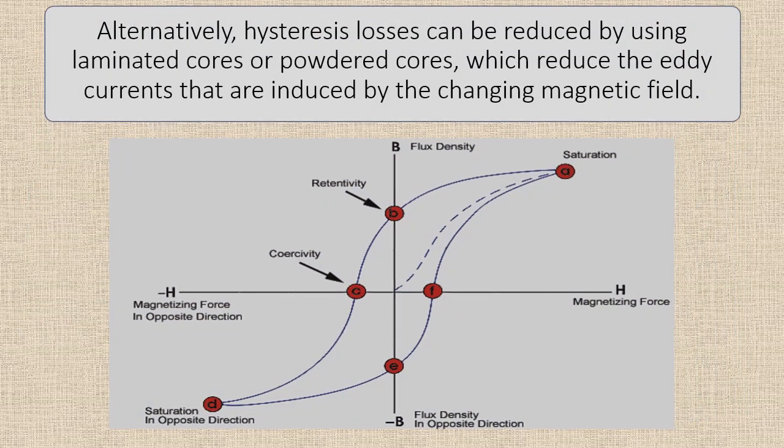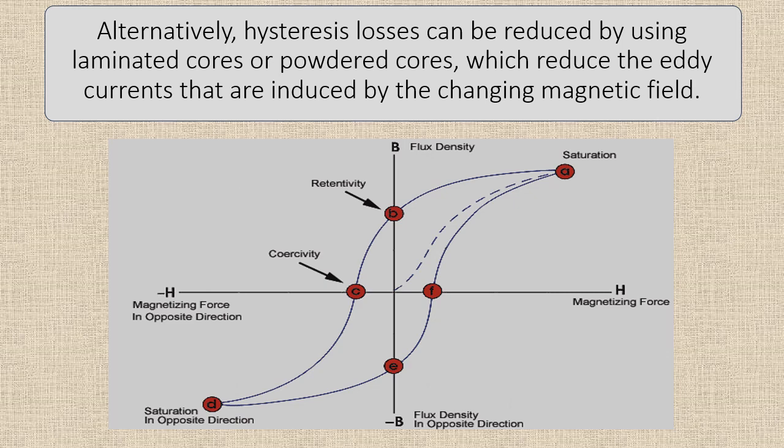Alternatively, hysteresis losses can be reduced by using laminated cores or powdered cores, which reduce the eddy currents that are induced by the changing magnetic field.